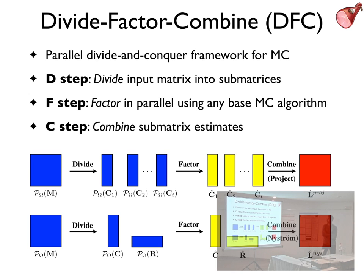So we came up with a meta algorithm called Divide, Factor, Combine. It's a parallel divide and conquer framework, and it involves the use of some base matrix completion algorithm, and then it involves three steps. It's very simple.